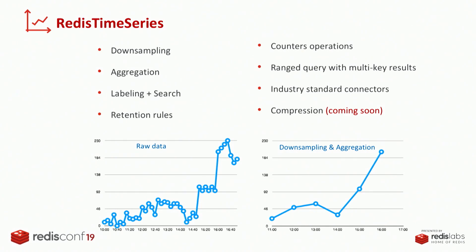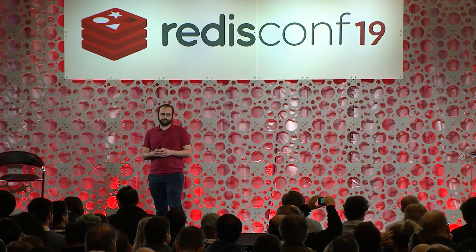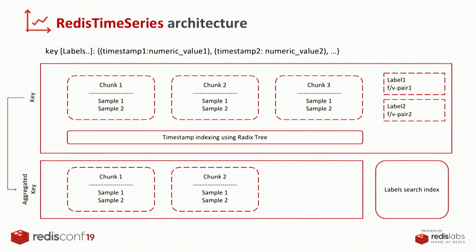Tomorrow, we're going to talk about more connectors and industry standard tools that you use with time series, and now we can use those with Redis Time Series. Soon we're going to release a new version with compression built in. To wrap it up, what we have is a Redis native data structure for time series where each key contains several chunks, each chunk contains several samples, and those samples are indexed with a Radix tree which comes from the robust architecture of streams inside Redis. The aggregated downsampling rules save the data in different keys so you can query whatever key you want and have the data as fast as you want it.